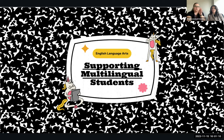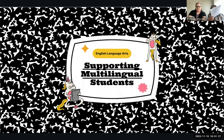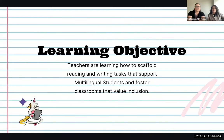As a quick overview, we're going to go through what we covered last month. If you weren't able to attend, check out the October 18th session, right before fall break. As a reminder, our learning objective is to help teachers learn how to scaffold reading and writing tasks that support our ML students and foster classrooms that value inclusion.